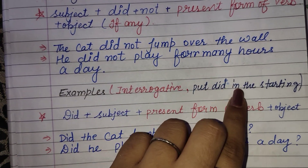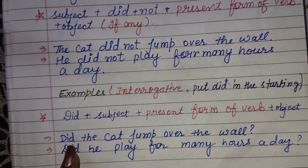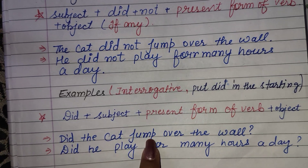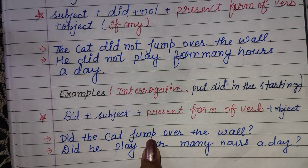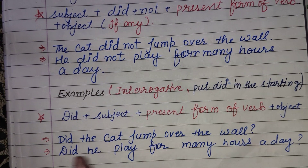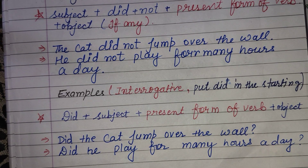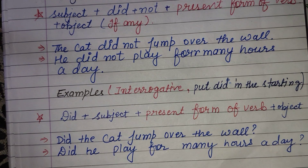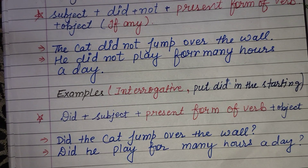For interrogative sentences, put 'did' at the start. As I explained, when 'did' is used, the verb comes in its first or present form. For example: 'Did the cat jump over the wall?' and 'Did he play for many hours a day?' This is how past indefinite or simple past tense works. I hope you all understood this topic.